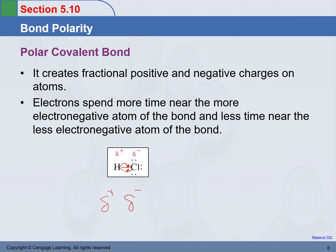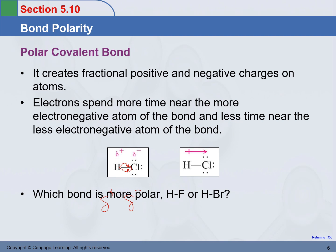There's another way to represent a polar bond: you use an arrow pointing to the atom that is more electronegative, and a vertical bar to tell other people these are the sharing electrons. It could be a single, double, or triple bond, but the sharing electrons stay closer to the more electronegative atom.